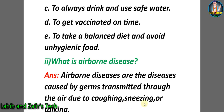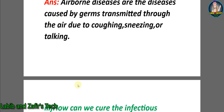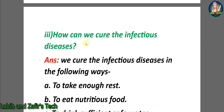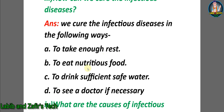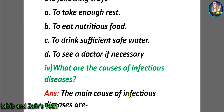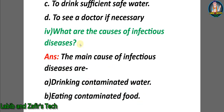Question two: what are airborne diseases? Answer: airborne diseases are diseases caused by germs transmitted through the air due to coughing, sneezing, or talking. Question three: how can we cure infectious diseases? Answer: we can cure infectious diseases by A) taking medicine, B) eating nutritious food, C) drinking sufficient safe water, D) seeing a doctor if necessary.